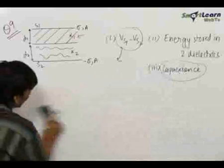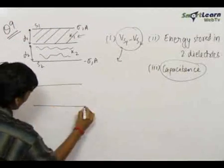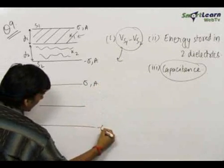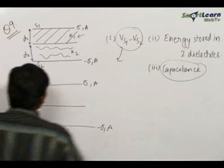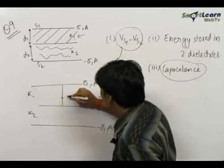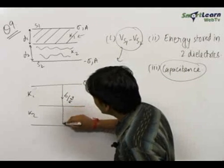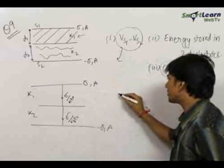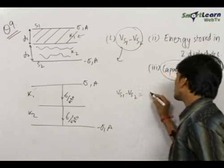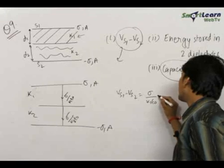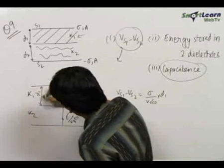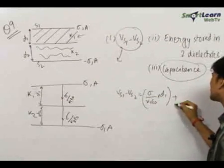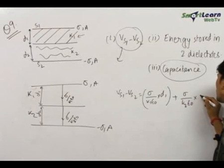Applying this logic to the given question: the electric field in the k1 region is sigma upon k1 epsilon zero, and the electric field in the k2 region will be sigma upon k2 epsilon zero. So the potential difference V_s1 minus V_s2 will be equal to sigma upon k1 epsilon zero into d1, since d1 and d2 are the respective distances, plus sigma upon k2 epsilon zero into d2.